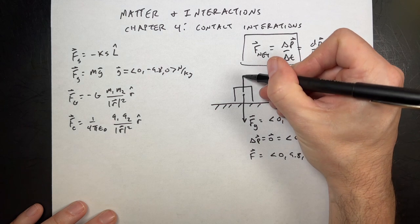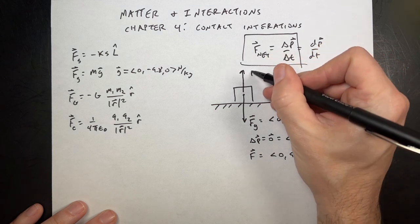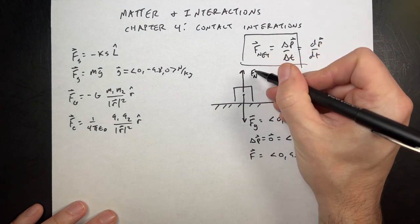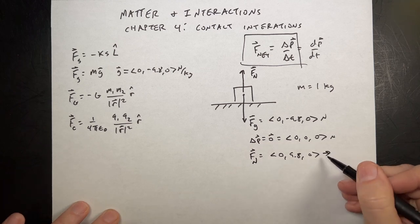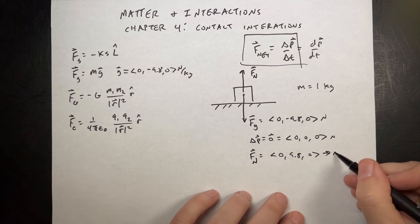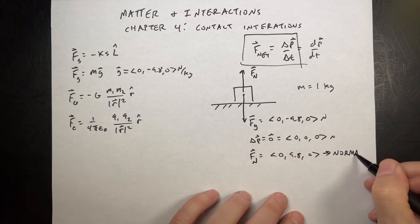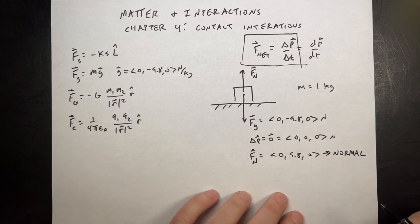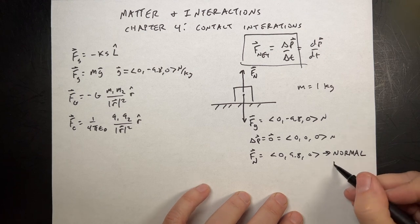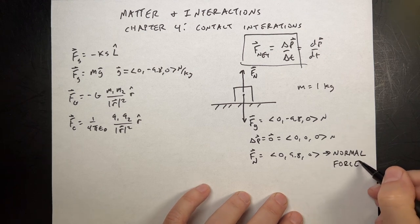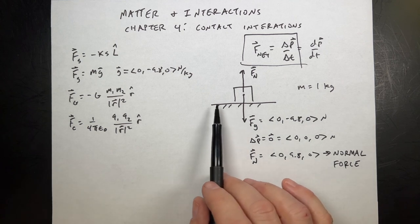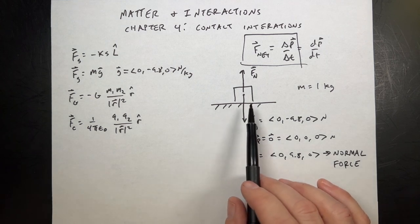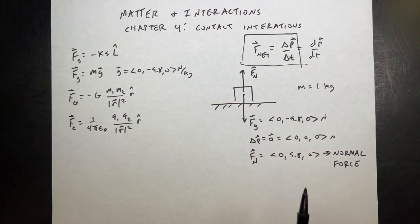So we have an upward pushing force right there, and we call it Fn — the normal force. Not because we usually have it; in this case, 'normal' means perpendicular, like from your geometry class. Because it's a force that's perpendicular to the surface that pushes up.